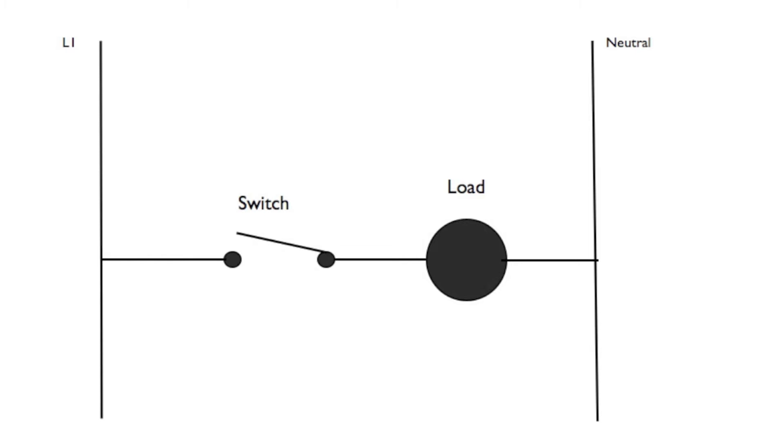Now I notice up in the upper left, we have an L1, and in the upper right we have a neutral. So this is a 120 volt circuit, has one power lead, one neutral lead. The ladder, of course, is the two vertical lines.